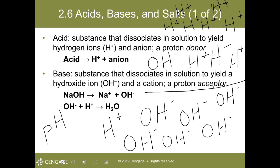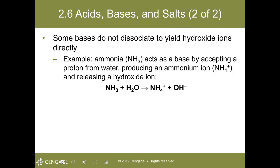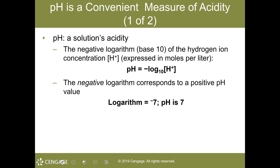Just because I've said a logarithmic scale doesn't mean this is something you cannot do. Some bases do not dissociate to yield hydroxide ions directly — such as ammonia, which acts as a base by accepting a proton from water, then producing an ammonium ion and releasing the hydroxide ion. So it's not directly, but in this case indirectly.